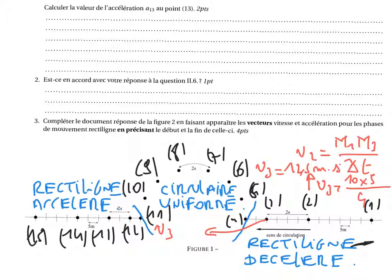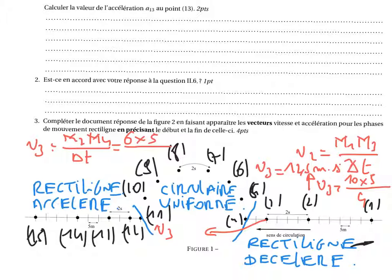Pour le point 3, c'est exactement la même remarque. V3 égale 1 enregistrement avant et 1 enregistrement après, c'est-à-dire entre le point 2 et le point 4. On écrira la distance parcourue entre M2 et M4 divisé par delta T. On compte 6 carreaux, soit 6 fois 5 mètres divisé par 4 secondes, ce qui nous donne 7,5 mètres par seconde.